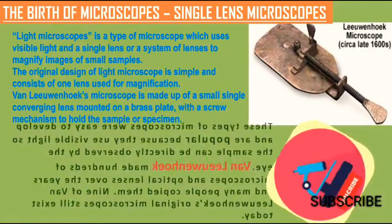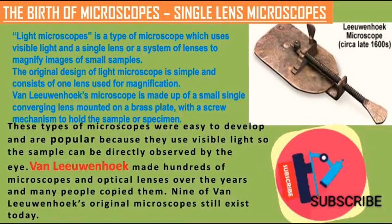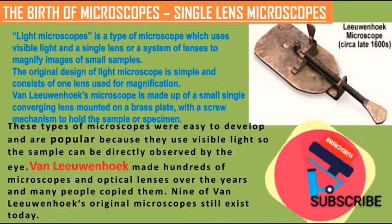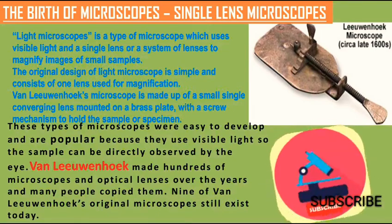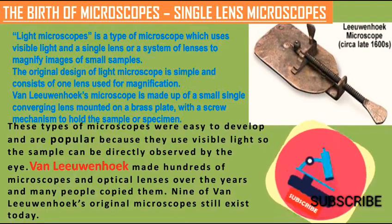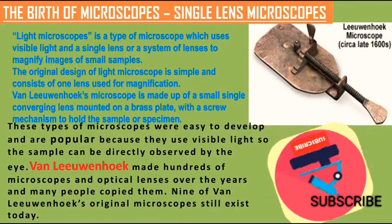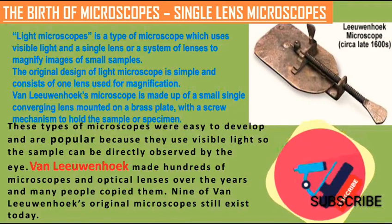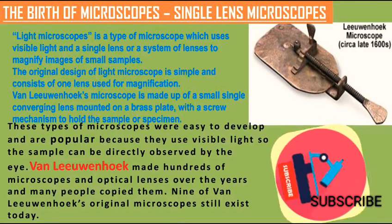The light microscope is a type of microscope which uses visible light and a single lens or a system of lenses to magnify images of small samples. The original design is very simple, consisting of one lens used for magnification. Van Leeuwenhoek's microscope is made of a small single converging lens mounted on a brass plate, with a screw mechanism to hold the sample or specimen.